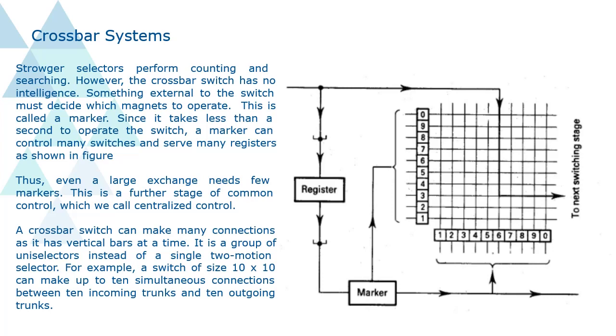A crossbar switch can make many connections as it has vertical bars at a time. It is a group of uniselectors instead of a single two-motion selector. For example, a switch of size 10 by 10 can make up to 10 simultaneous connections between 10 incoming trunks and 10 outgoing trunks.